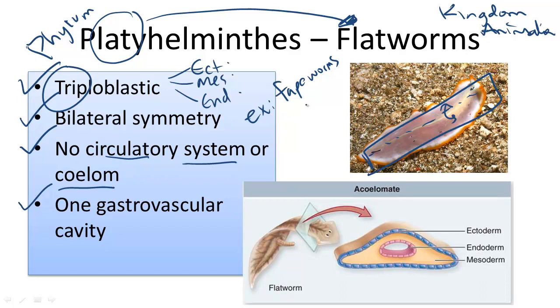In evolutionary terms, flatworms are the most primitive of the bilaterally symmetric animals, but they remain more complex than sponges and cnidarians.